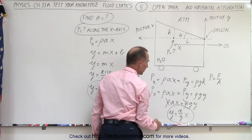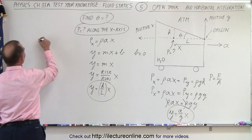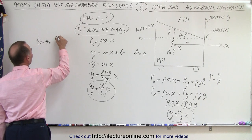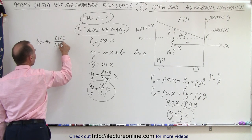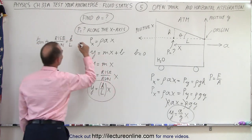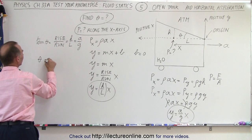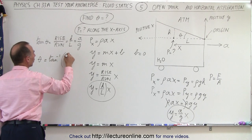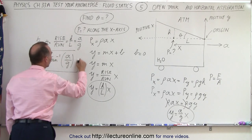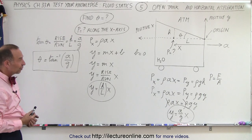Notice that h/l is the slope of the line, which means a/g is also the slope of that same line. Therefore, the tangent of the angle θ — which equals the rise over the run — equals h/l, which also equals a/g. This means θ = arctan(a/g), and that is the angle of the slope of the top of the water in the tank.